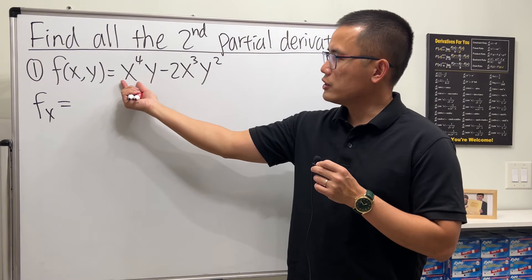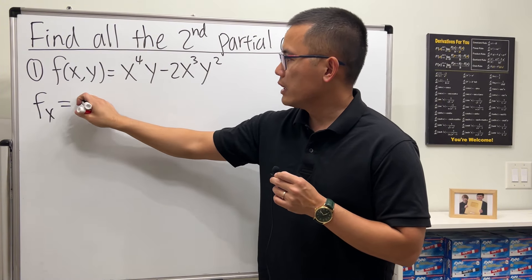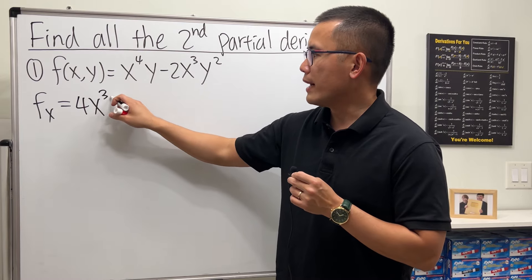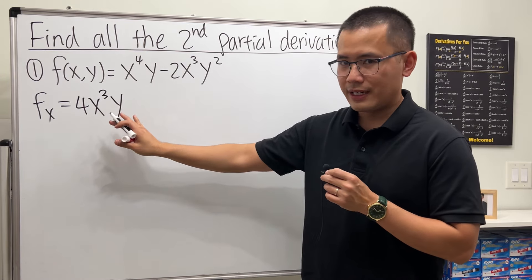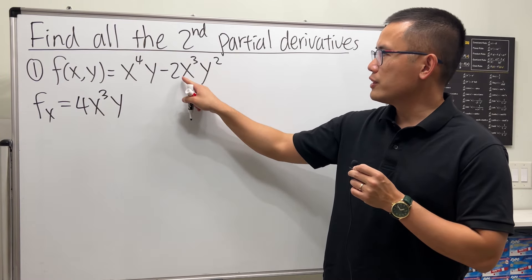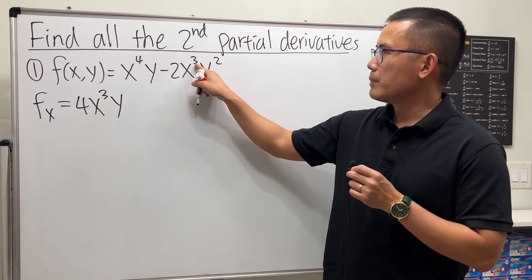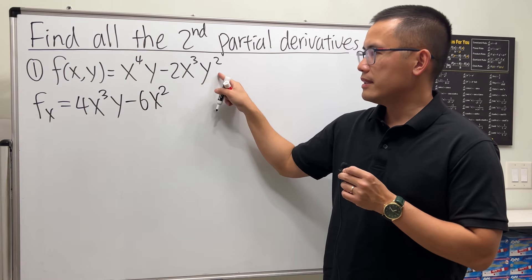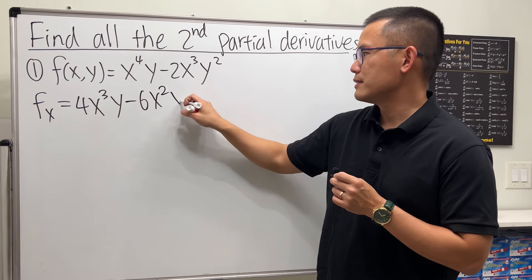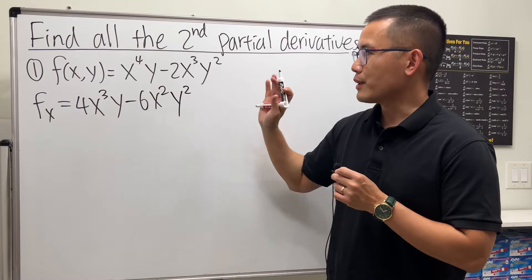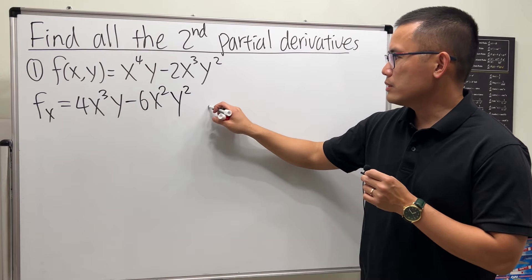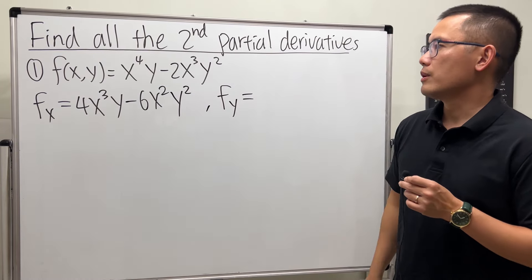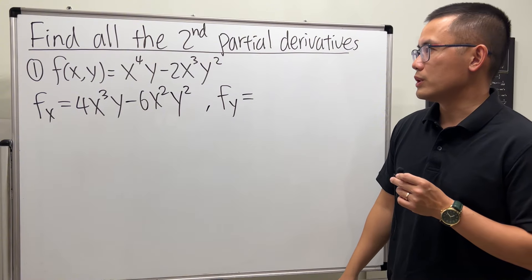For fx, I will differentiate x to the fourth power and we get 4x to the third power, and then y stays. For the second term, I differentiate using the power rule so we get minus 6x squared, and the constant multiple y squared stays.